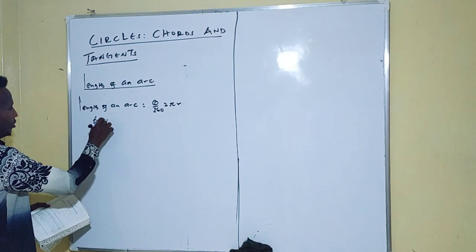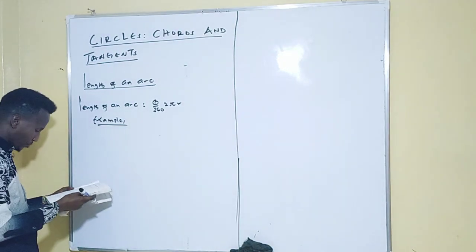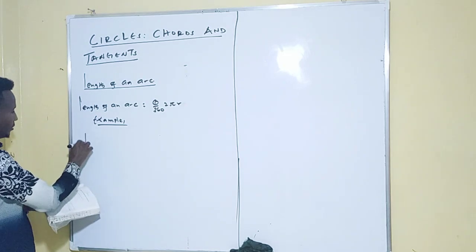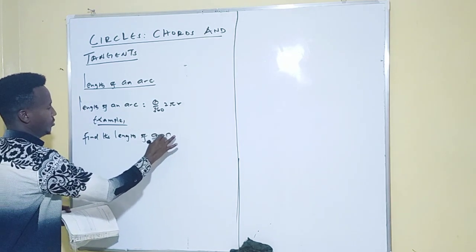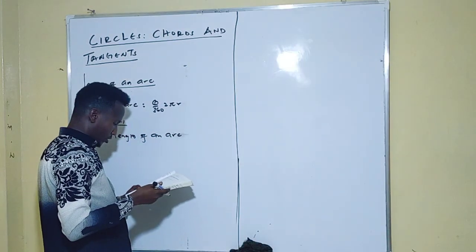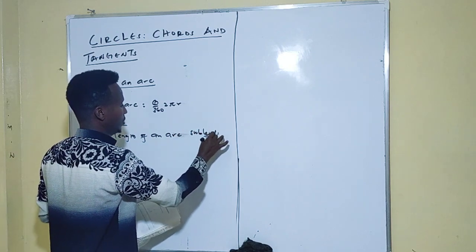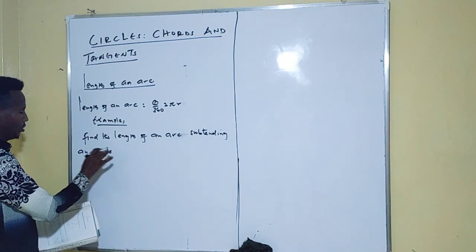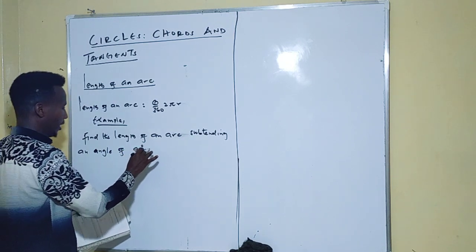Without wasting time, let's see Example 1. You are told: find the length of an arc subtending an angle of 90 degrees at the center of the circle.